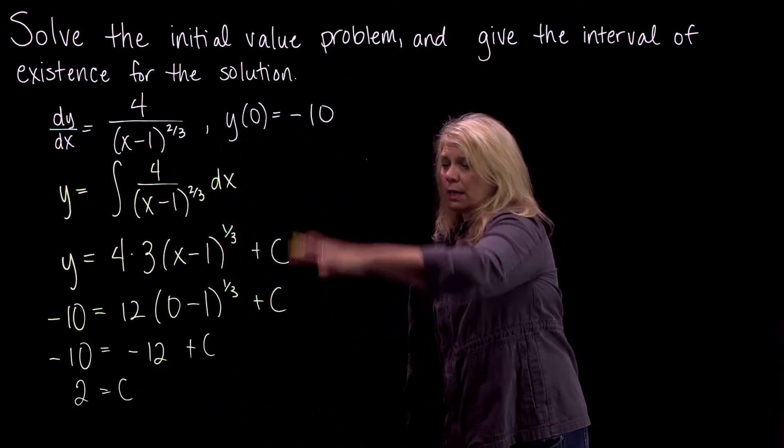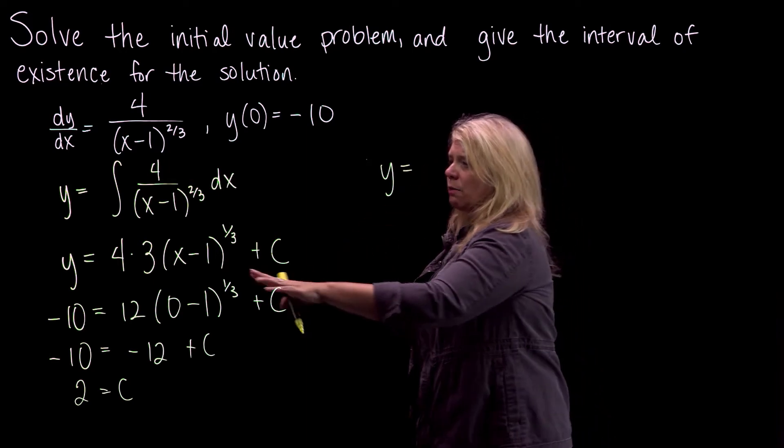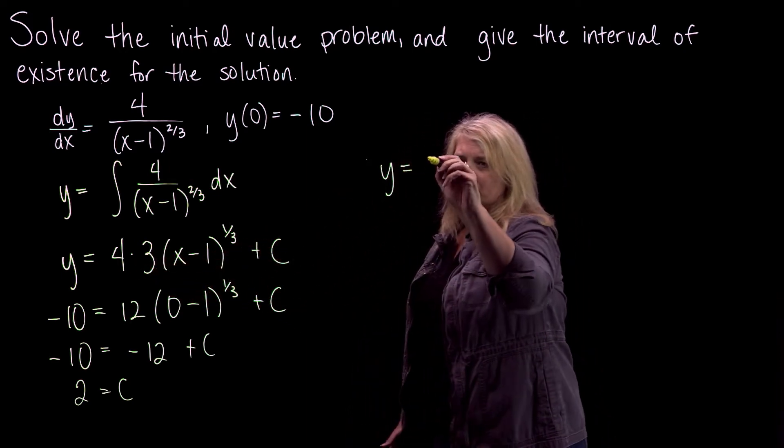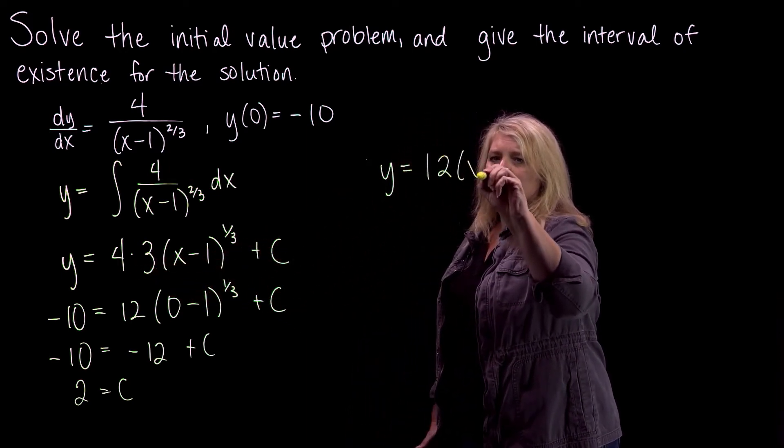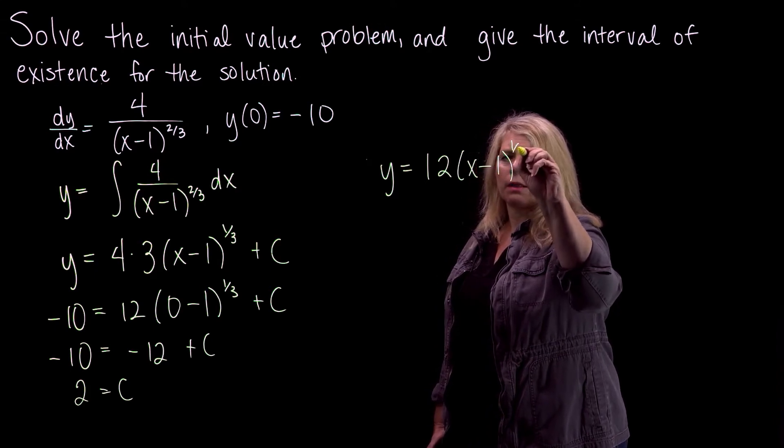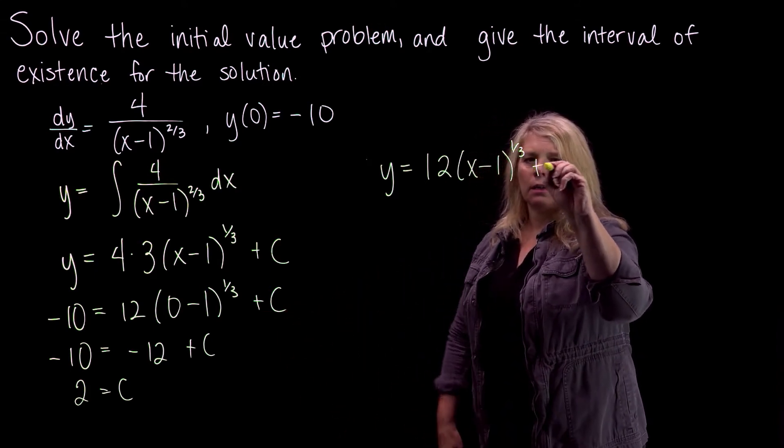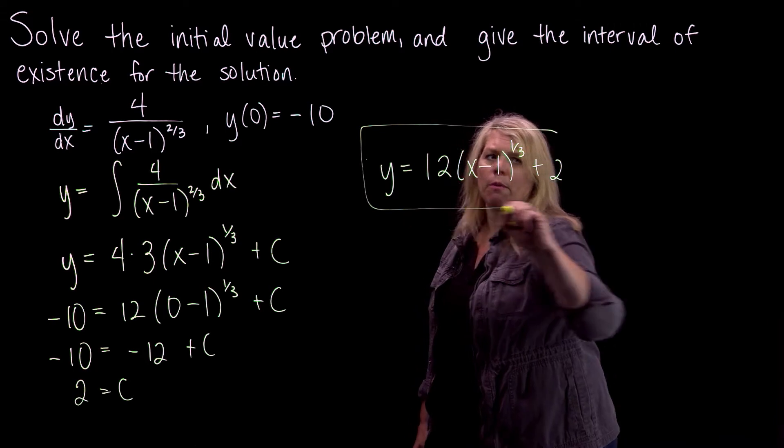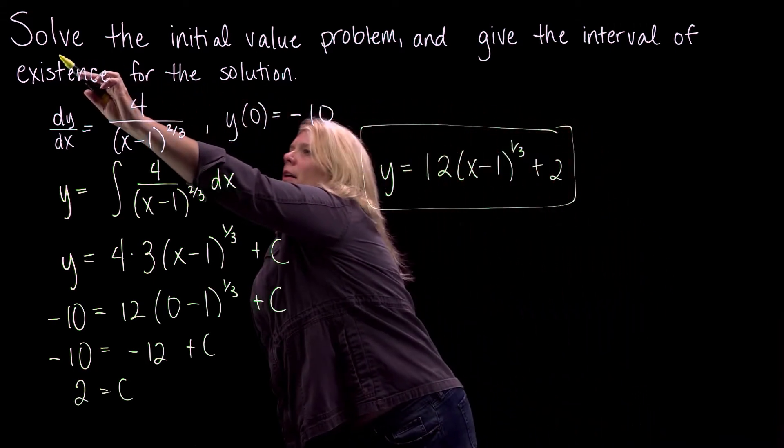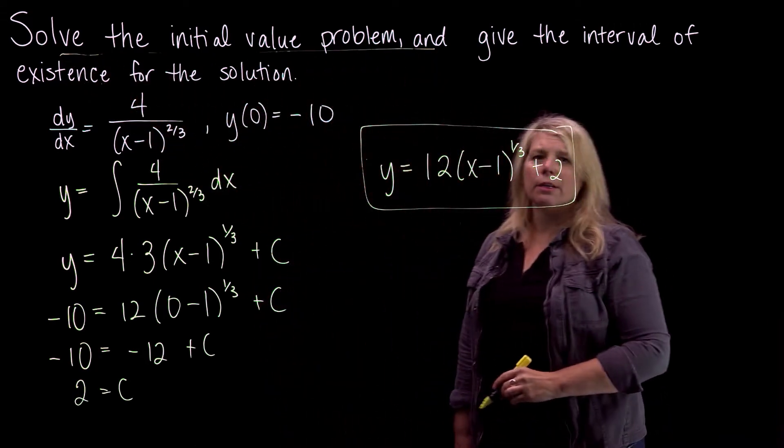Alright, so our solution to the initial value problem here is y equals, I'm going to go ahead and clean this up and make that just 12 times (x - 1) to the 1/3 plus 2. Alright, so at that point, we've done the first part of what it asks us to do, solve the initial value problem.